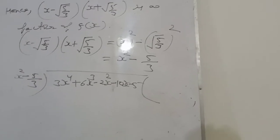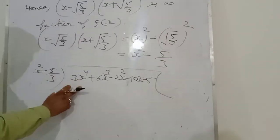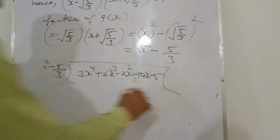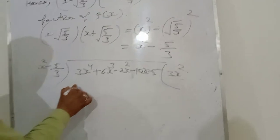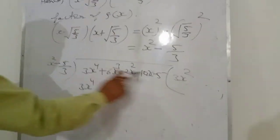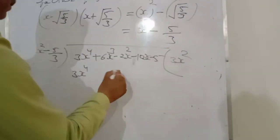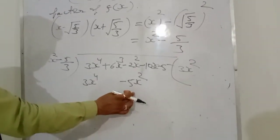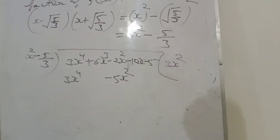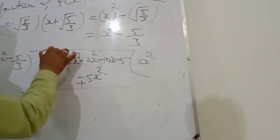तो देखें यहाँ पर long division: x² - 5/3 से divide कर रहे हैं 3x⁴ + 6x³ - 2x² - 10x - 5 को. First term: x² से 3x⁴ divide करने पर 3x² times. So 3x² × (x² - 5/3) = 3x⁴ - 5x². Like terms एक साथ — x² के नीचे x². Subtraction करने पर sign change: minus हो गया plus, यह term cancel हो चुके हैं.